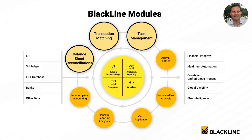The second module is the transaction matching module. This module can automatically match transactions from one file against another. The most common use case is for bank reconciliations. We create pass rules or match rules within the system, allowing it to do all the work of matching journal entries to bank transactions. Most customers see the system matching over 90% of their bank transactions.